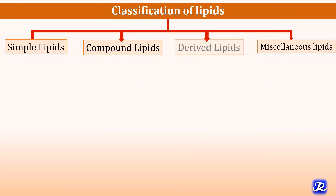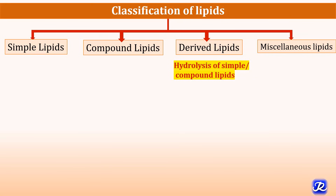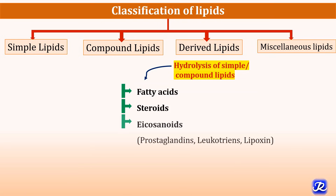The third class of lipids is derived lipids, obtained on hydrolysis of simple and compound lipids. Examples include fatty acids; steroids, which include steroid hormones like mineralocorticoids, glucocorticoids, estrogen, progesterone, and testosterone; eicosanoids, which are derived from arachidonic acid — a 20-carbon compound — with examples being prostaglandins, leukotrienes, and lipoxins; and ketone bodies, which are also derived lipids formed from acetyl-CoA.